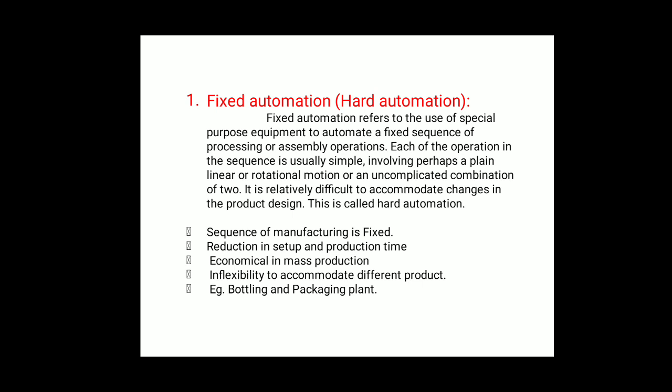By using this system we can reduce setup time because the sequence of operations is already fixed, and production time is also reduced. It is economical for mass production. The inflexibility to accommodate different products means it cannot be used for varying designs — only mass production. Examples include bottling and packaging plants. This type is also called hard automation.